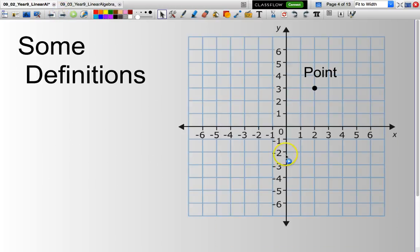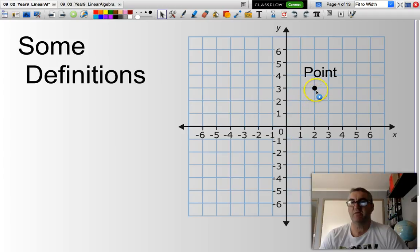Now, just as a recap, a point can be considered to have a set of coordinates. In this situation, this point here has the coordinates x equals 2, y equals 3.